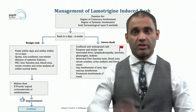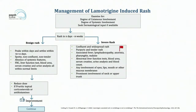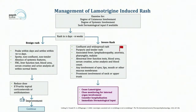A severe rash is confluent, widespread, purpuric, and tender. It's associated with systemic involvement: fever, lymphadenopathy, anorexia, pharyngitis, malaise. Blood tests reveal abnormal liver functions, abnormal renal functions, blood urea, serum creatinine, urine analysis, and blood count abnormalities. Any involvement of eyes, lips, or mouth, as seen in DRESS, or prominent involvement of the neck or upper trunk is cause for concern. If this occurs, cease Lamotrigine — as opposed to reducing the dose. Close monitoring for internal organ involvement and consider hospitalization with immediate dermatological input.